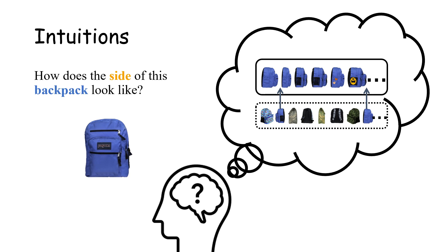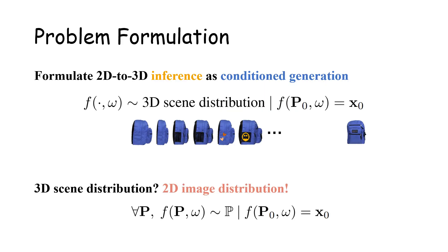Inspired by this, we propose a single image NeRF synthesis framework without 3D supervision by leveraging a large-scale diffusion-based 2D image generation model. We formulate 2D to 3D inference as a conditional generation problem, where we generate a 3D scene following a certain 3D distribution, conditioned on the constraint that its rendering at a given view p0 should match the input image.